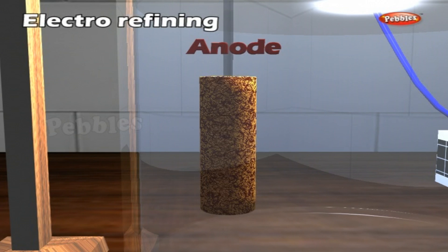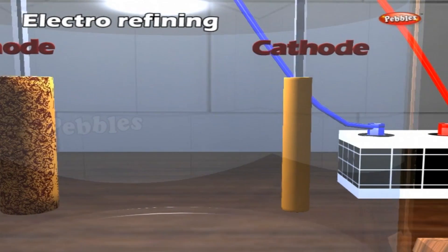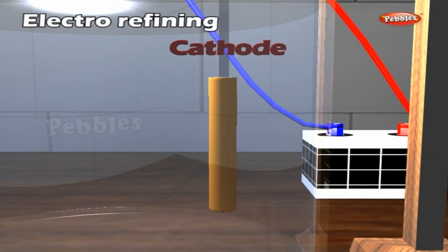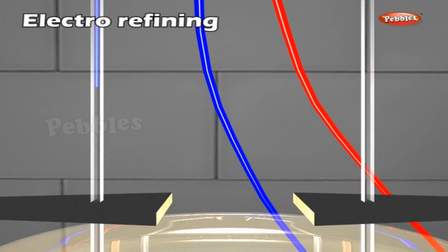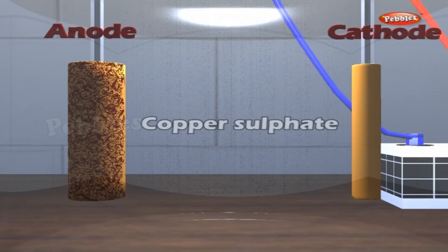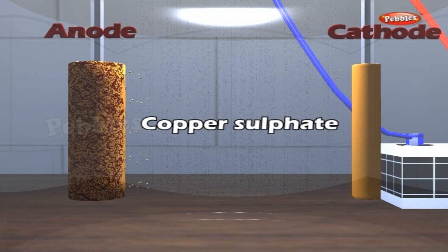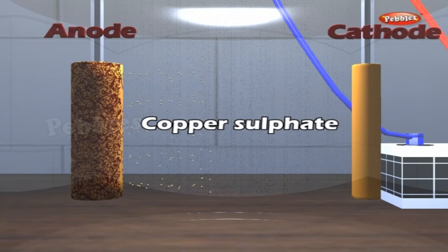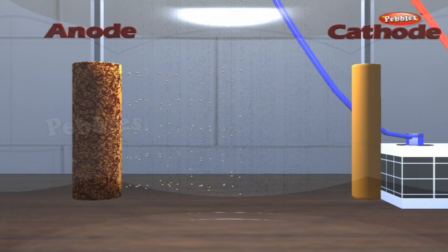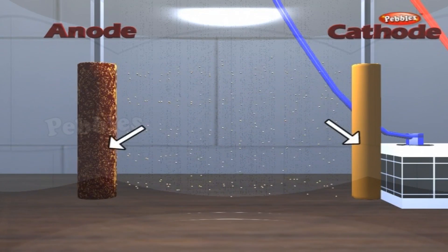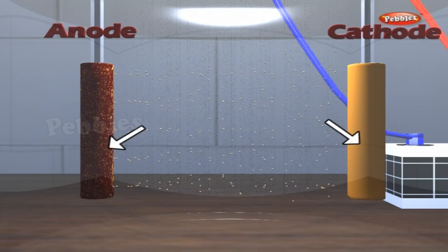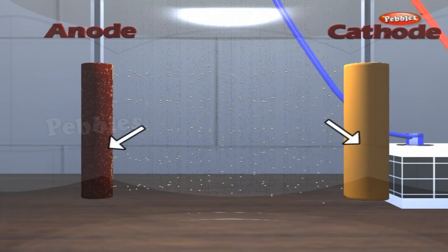A bar of impure copper is used as the anode and a thin sheet of pure copper is used as the cathode. The electrolyte must be concentrated copper sulphate solution with a little sulphuric acid. On passing electric current, pure copper is deposited at the cathode. The impurities settle at the bottom of the anode as anode mud.